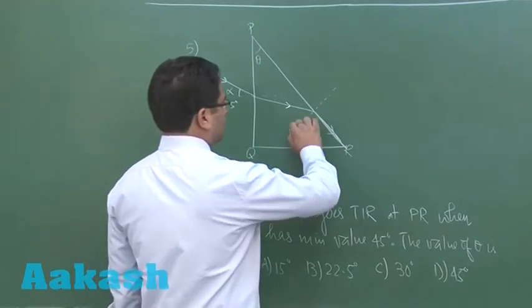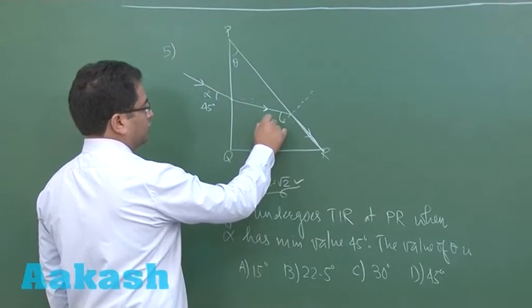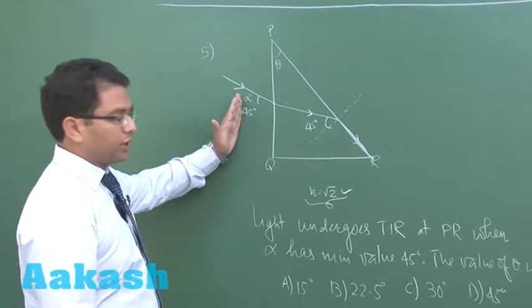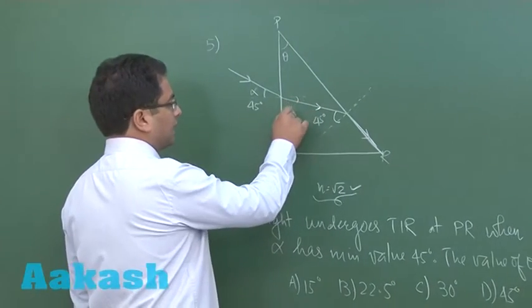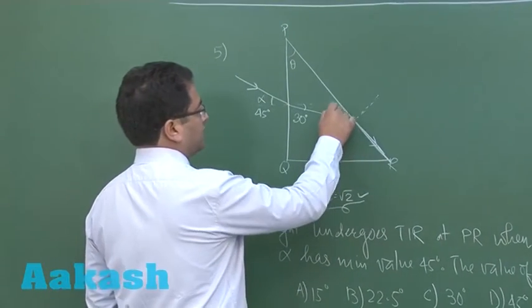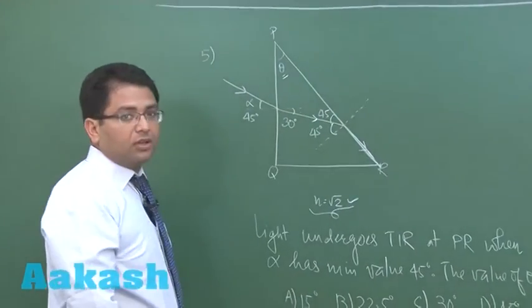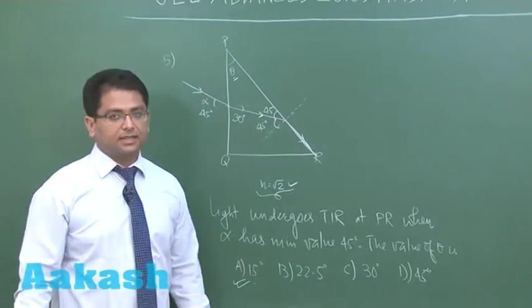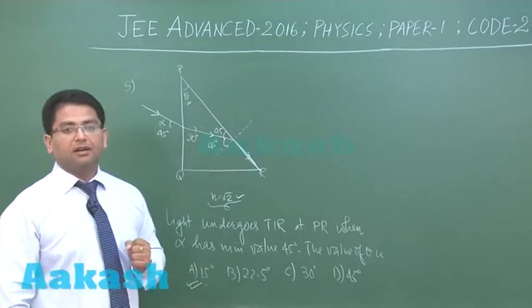First of all, if refractive index is root 2, then the critical angle has to be 45 degrees. When angle of incidence is 45 and refractive index is root 2, use Snell's law and very easily you would get the angle of refraction as 30 degrees. Now if this is 45, this would be 45. So calculating theta would not be a trouble. That's a triangle, the sum total of all internal angles is 180. That would give you the first option as the correct answer. So 15 degrees would be the value of theta. This is about question number five.